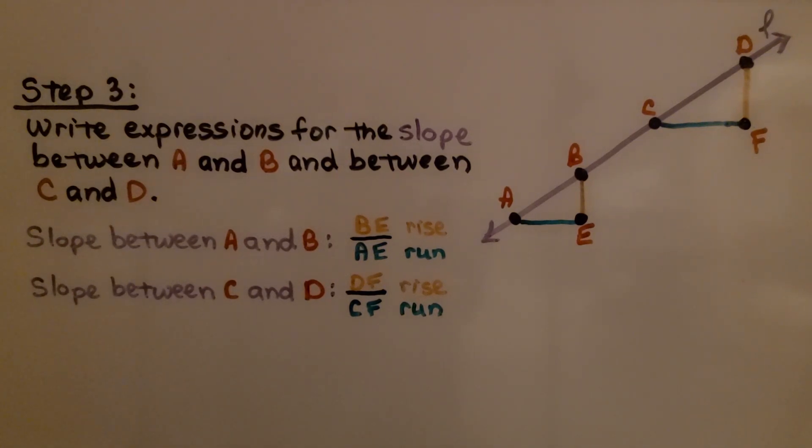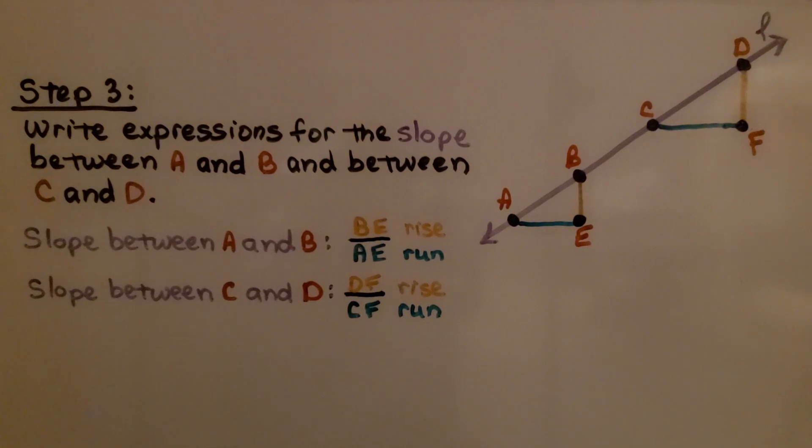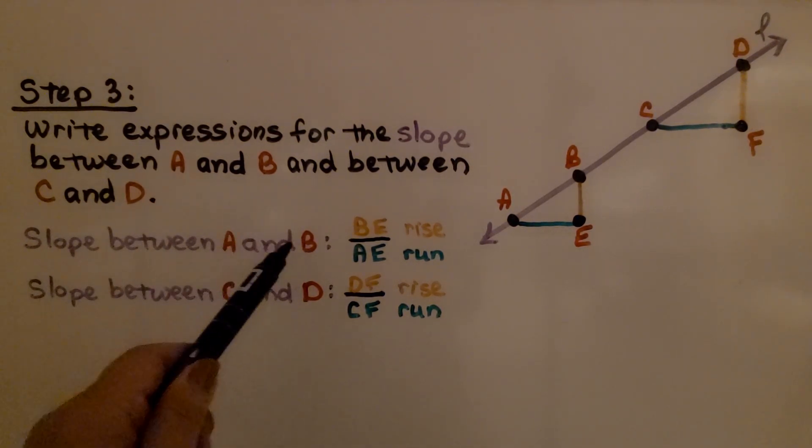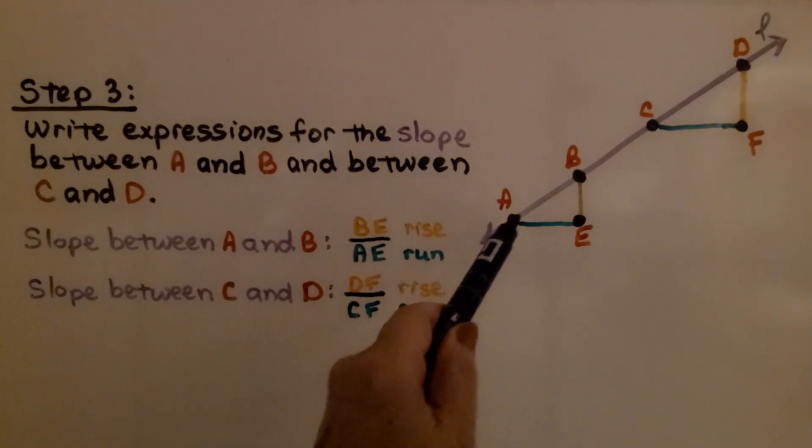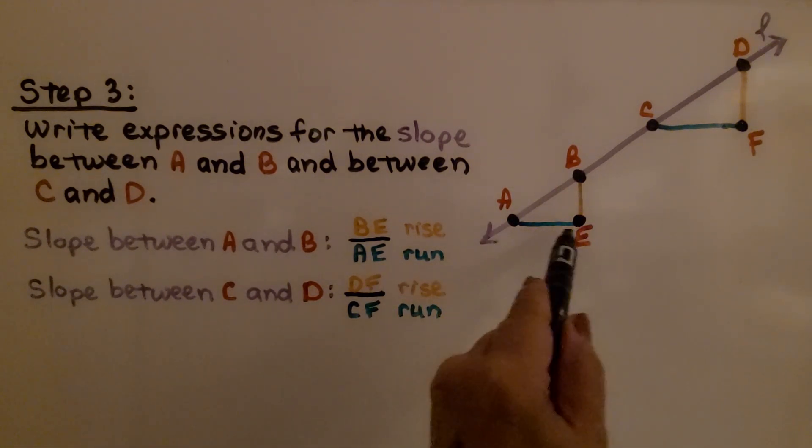For step three, we write expressions for the slope between A and B, and between C and D. The slope between A and B is the rise over the run, so it's BE over AE.